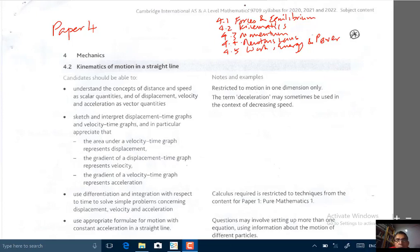In this video we are going to talk about the topics that will be covered in Paper 4, the mechanics paper of the CIE AS and A-level mathematics, subject code 9709, syllabus for 2020 onwards.